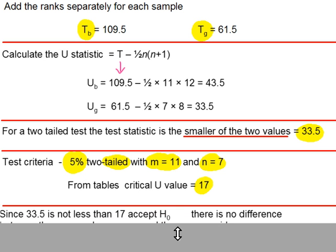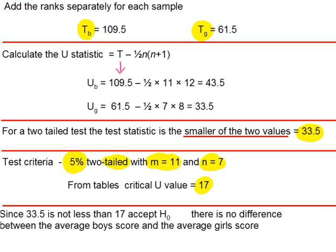So the critical value is 17. And using the same condition as before that if the test statistic is less than or equal to the critical value then you reject H0, only if this is true. Our test statistic is 33.5, the critical value is 17. Clearly 33.5 is not less than or equal to 17, so we're going to accept H0.